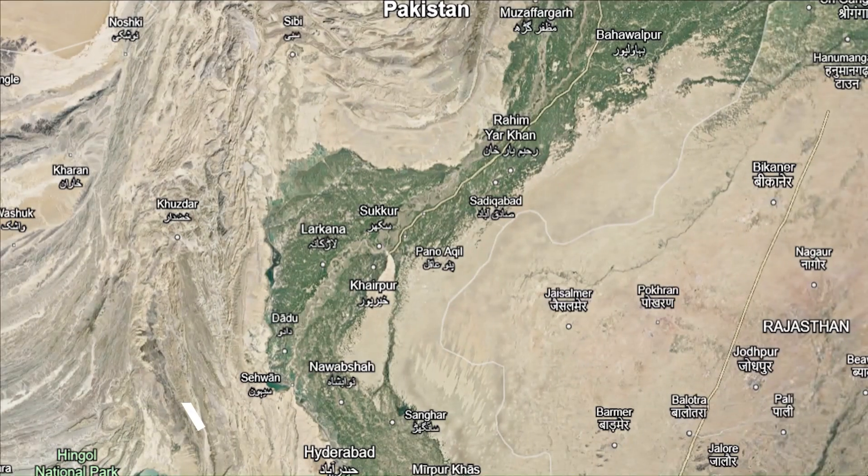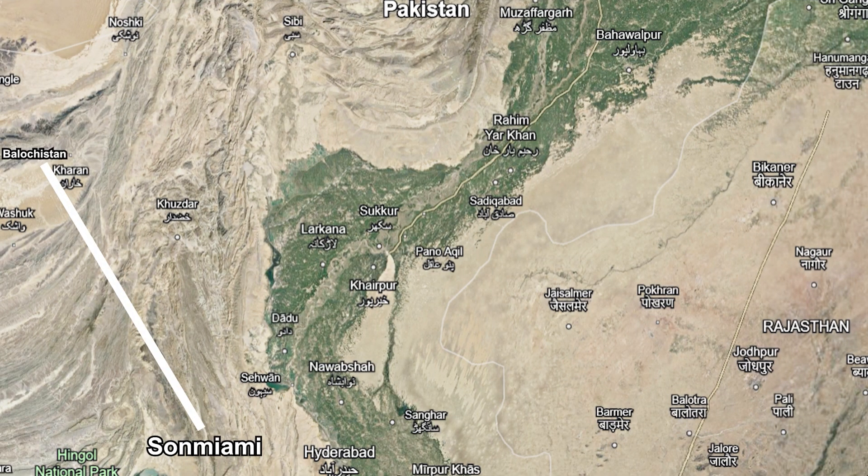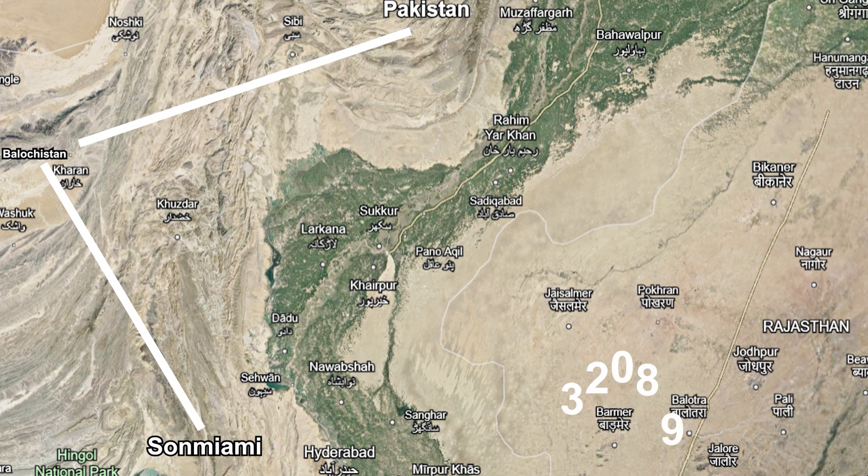Confused? You see, if you begin sailing from Son, Miami, Balakistan, Pakistan, you will not come across any landmass for the following 32,089.7 kilometers.